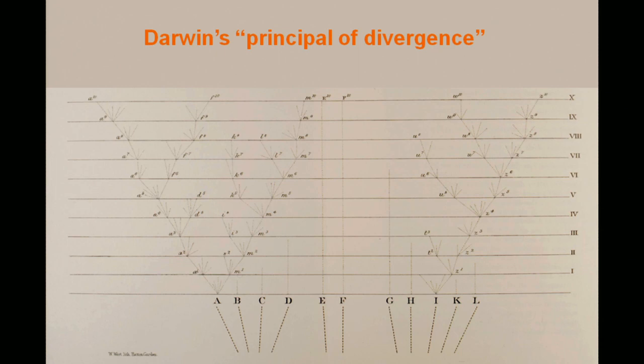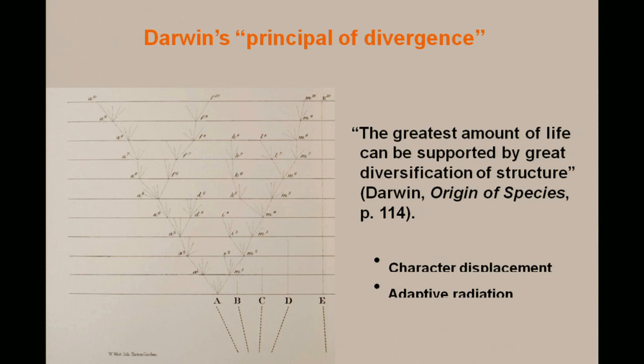Darwin summed up this basic principle under what he called his principle of divergence. And in The Origin of Species, he wrote: 'The greatest amount of life can be supported by great diversification of structure.' He understood, as economists did, that there's a division of labor and a benefit to the division of labor. He applied that concept to evolution. And this concept has come to encompass, in modern evolutionary biology, two basic principles: one is called character displacement and the other is called adaptive radiation.